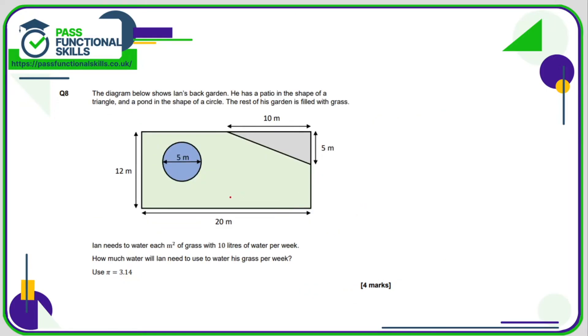Question eight: the key thing here is we need to work out the area of the grass. So the area of the grass is the area of the garden minus the area of the patio minus the area of the pond.